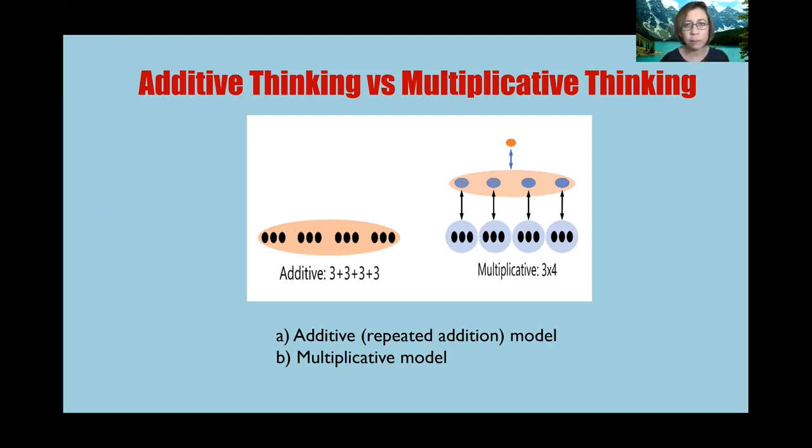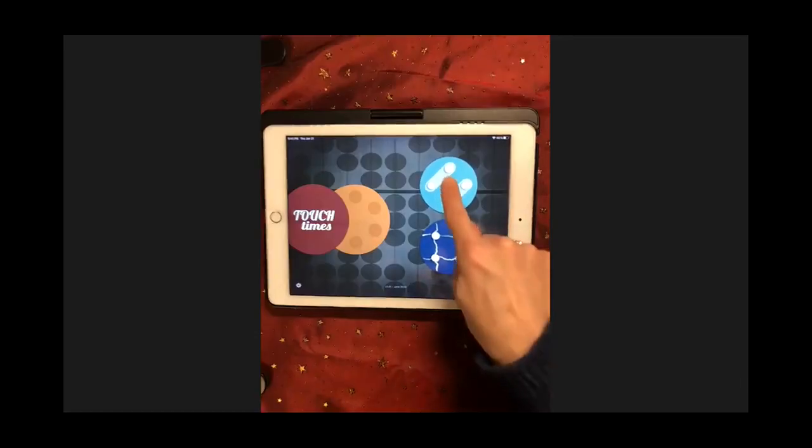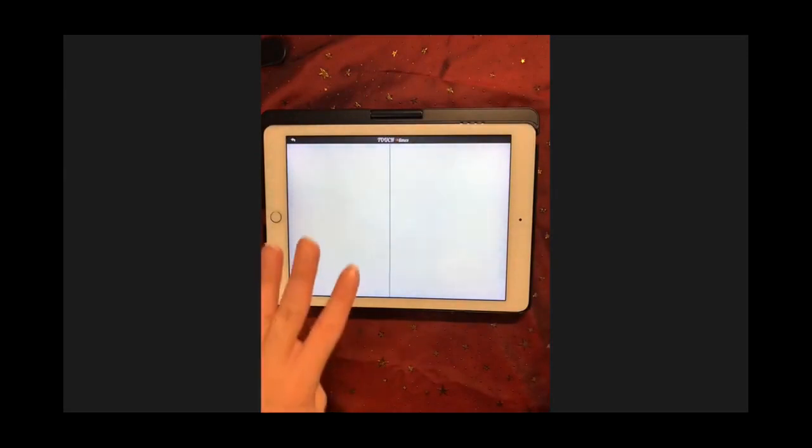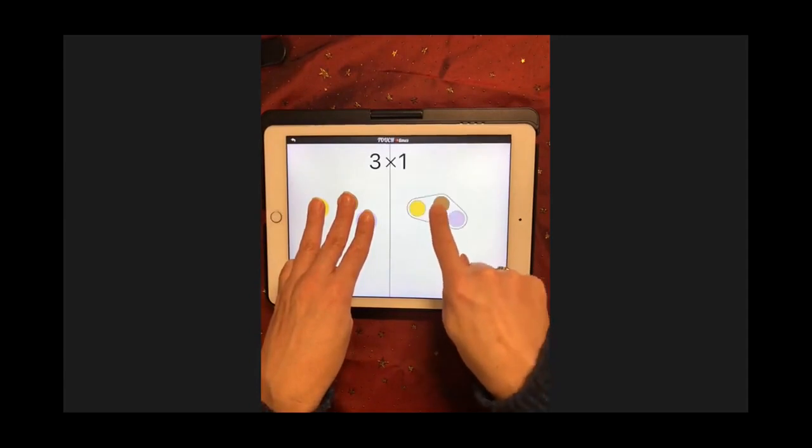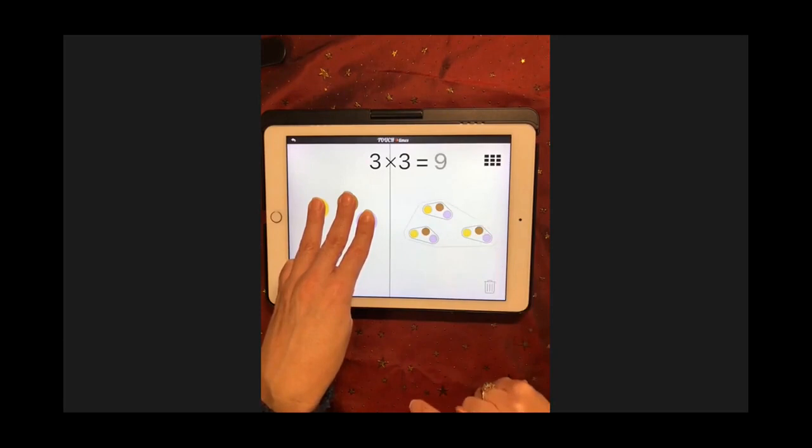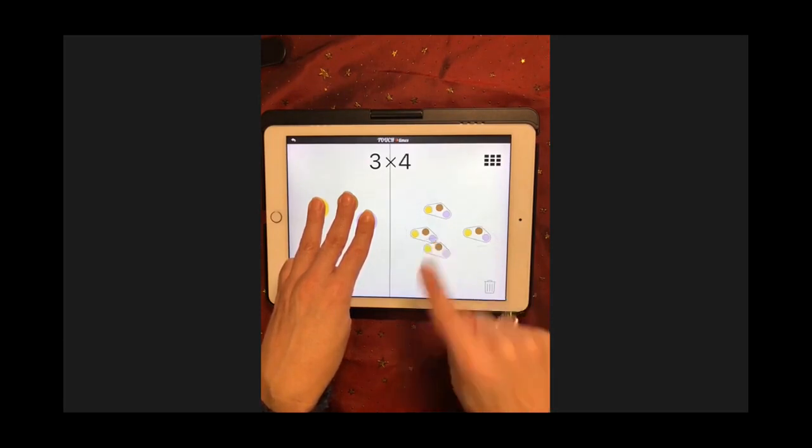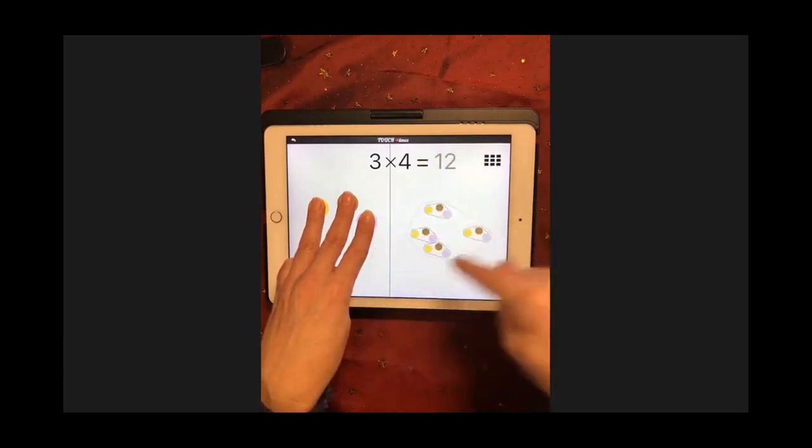Let's have a look at how Touch Times shows this multiplicative model. Using Graspify, students can explore double unitizing, first by making a set of countable items such as three, and making a single unit of three. This can then be iterated or copied multiple times, and then Touch Times unitizes again by encircling the pods to make a single product of 12.